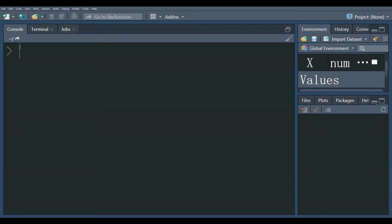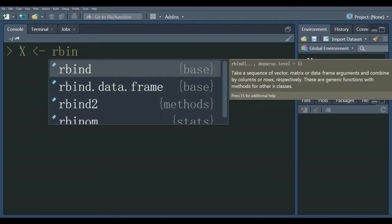Now, first we create a matrix. Here is matrix X. We use the rbind, or rowbind command, to create the matrix.